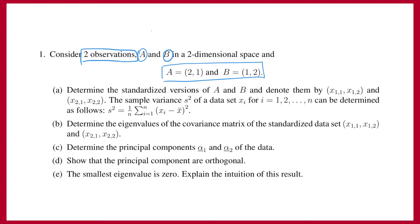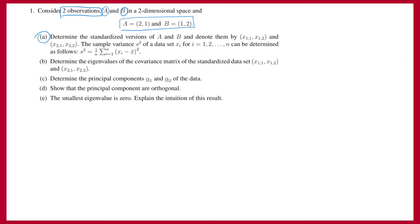So we start with question A. In question A, we say that the standardized versions of A and B are denoted by x-values. However, if you look at the data points, these are not standardized — they do not have mean 0, as you can clearly see. So we have to start from the observations as we have them here.